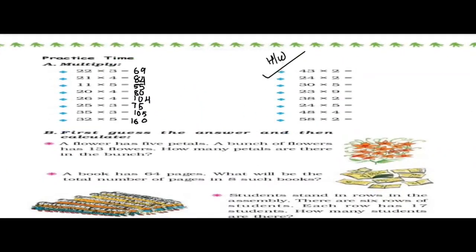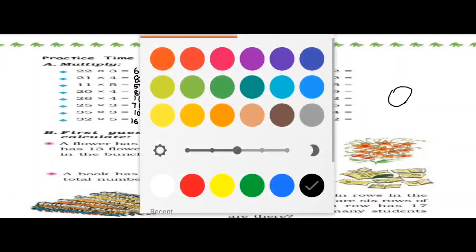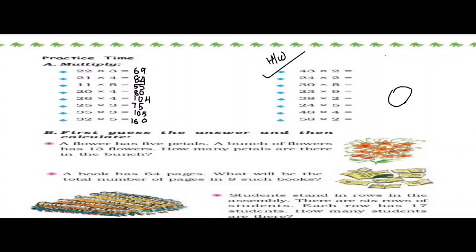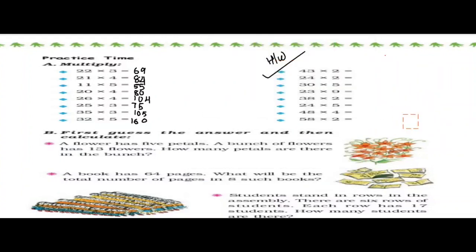Now, number B — first give the answer and then calculate. A flower has 5 petals. A bunch of flowers has 13 flowers. How many petals are there? Petals are this part of the flower — let me color it in a different color. So 1, 2, 3, 4 and 5 — this colored part of the flower is called petals. I hope you understand the meaning of petals. Let us move to the question.